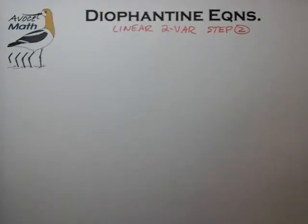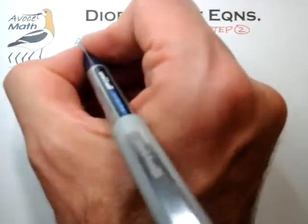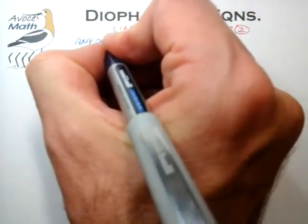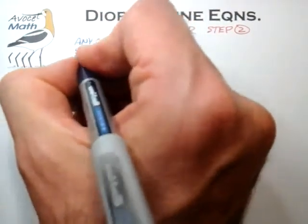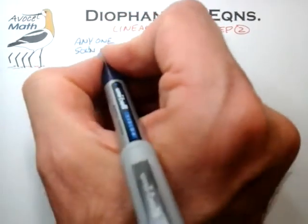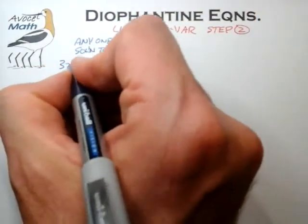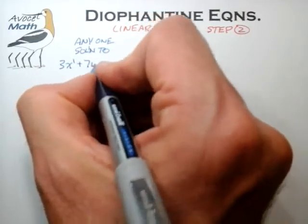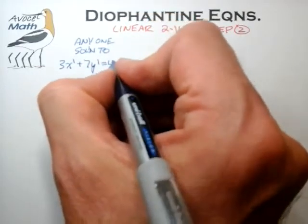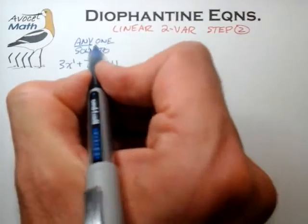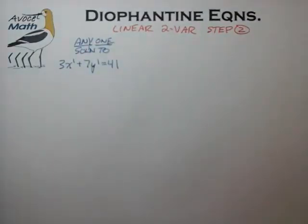Welcome back to Avocet Math. In this video we're going to do step two of our linear two-variable Diophantine equation. In step two, what we're tasked to find is any one solution to the specific Diophantine equation — in this case 3x' + 7y' = 41. We're looking for basically any one solution, and for most practical purposes any solution we find will serve our purposes.